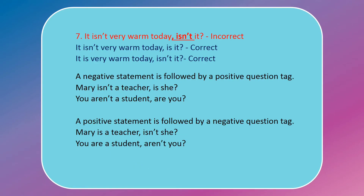It isn't very warm today, isn't it? — this is incorrect. A negative statement is followed by a positive question tag, and a positive statement is followed by a negative question tag. So the correct sentence is: it isn't very warm today, is it? And: it is very warm today, isn't it? A few more examples — Mary isn't a teacher, is she? Mary is a teacher, isn't she? You aren't a student, are you? You are a student, aren't you?